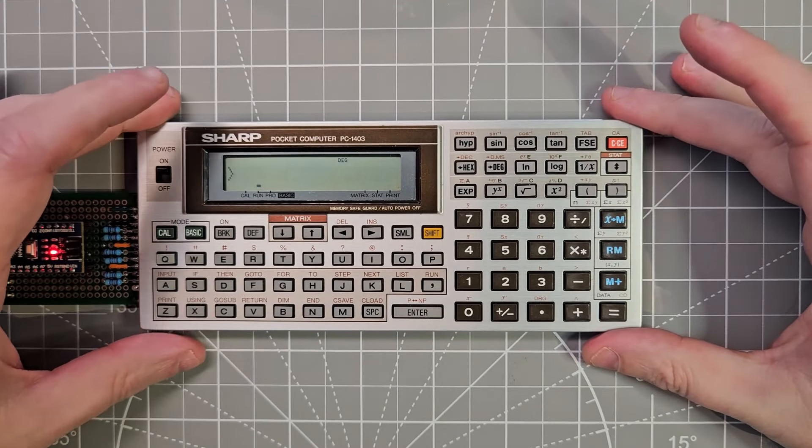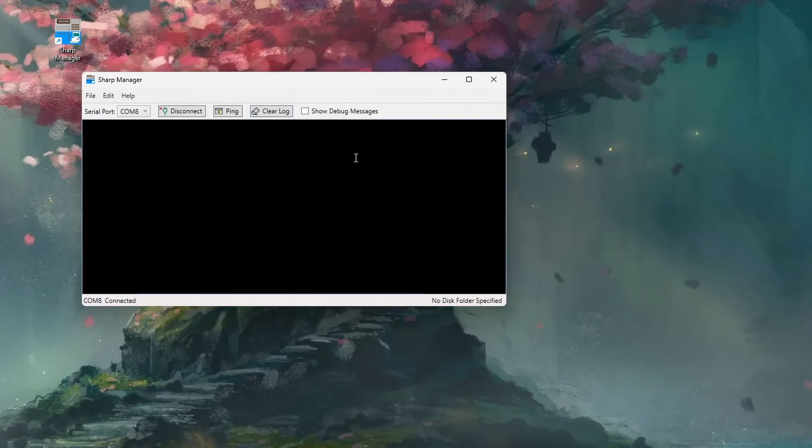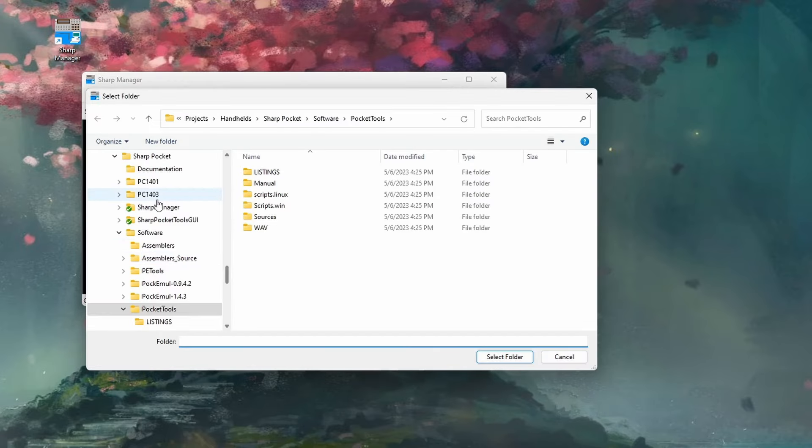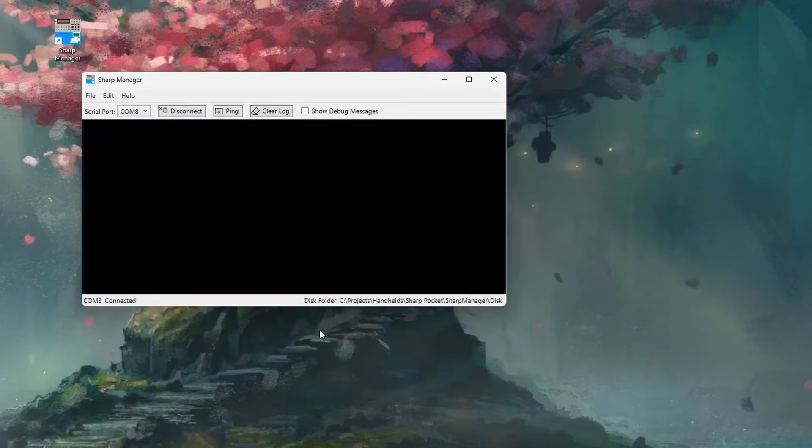So we'll get into run mode and we'll go back over to Sharp Manager. And what we need to do is specify a folder that we'll use as a disk drive. So I'm going to click this and I actually have a folder already set up. I called it disk. It has some files in it. And so now we're ready to go. So this thing is already emulating a floppy drive.